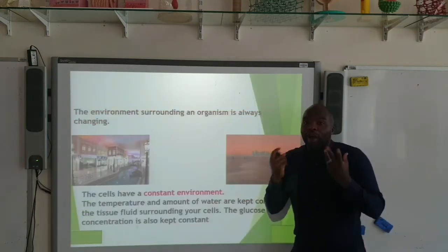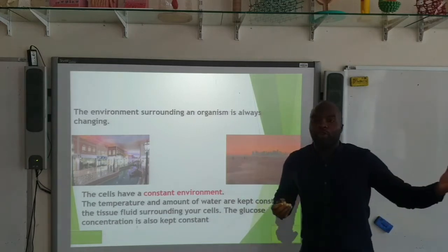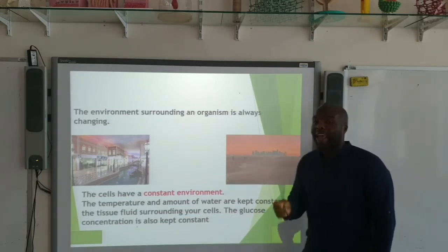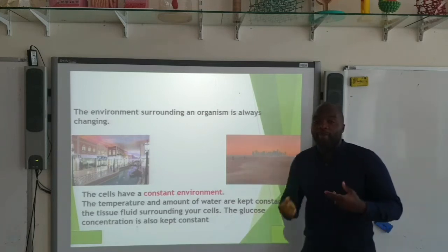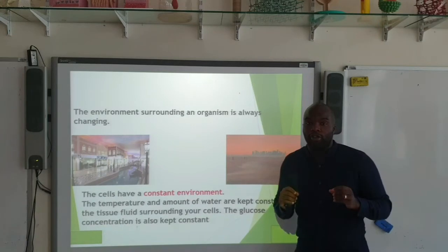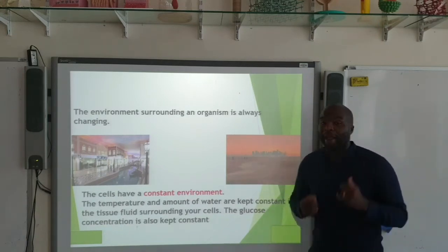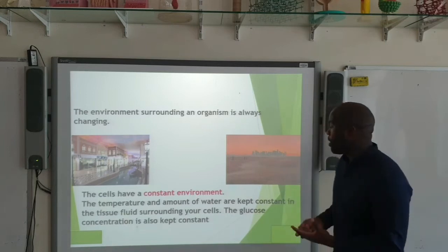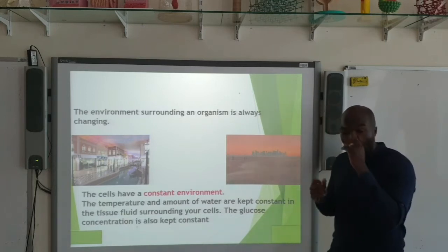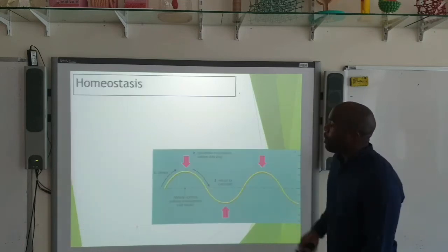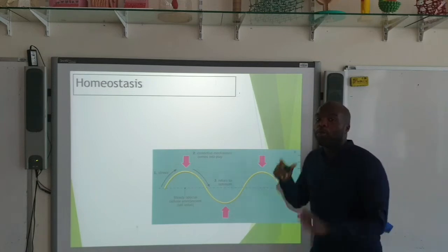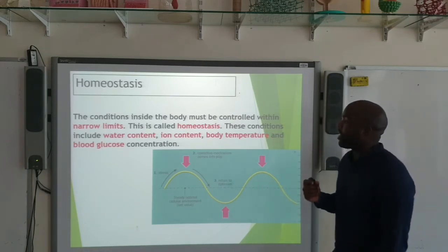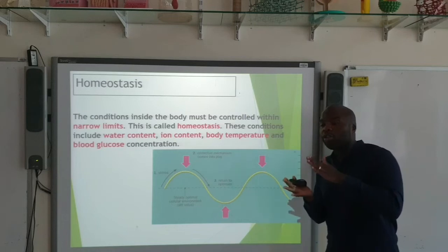The environment surrounding an organism is constantly changing — if you're outside it could be cold or hot. However, the cells maintain a constant environment. The internal environment of an organism must remain constant within a narrow limit. This internal environment refers to body temperature, the amount of water, the amount of glucose in the blood, etc. They all must be kept constant. Maintaining a constant internal environment within narrow limits is known as homeostasis.